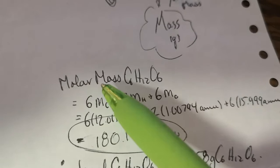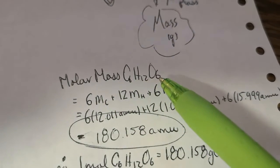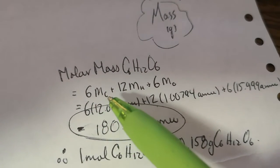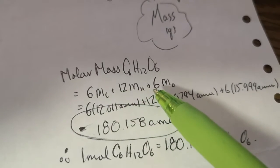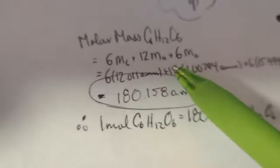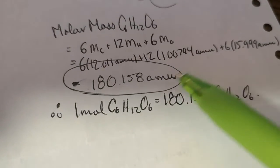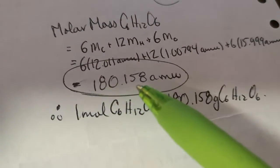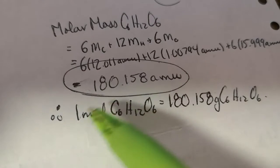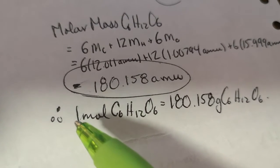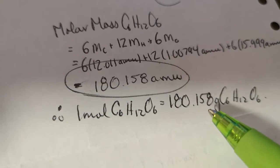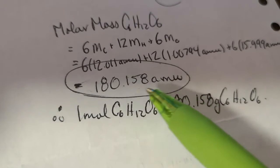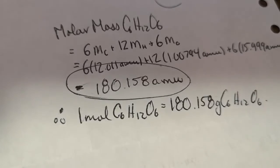Now the molar mass of C6H12O6 is equal to six times the mass of carbon from the formula, 12 times the mass of hydrogen, and six times the mass of oxygen. When we sum all those values together, we end up with 180.158 AMUs. Therefore, from that information, we gather that one mole of glucose is equal to 180.158 grams.